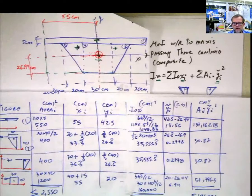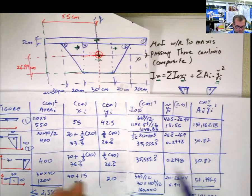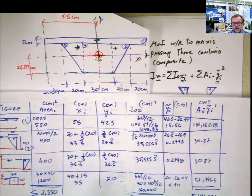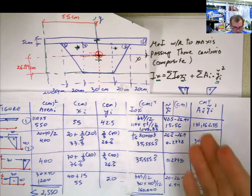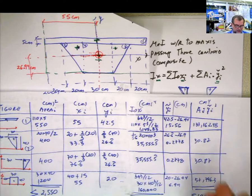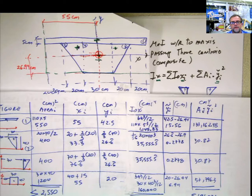That would be the moment of inertia with respect to the centroid of this composite section. Go back and check it in detail — there might be slight differences in the numbers because I paused and retook the problem, but the result is correct. If you have any comments, let me know. I hope you enjoyed watching this, and see you next time.